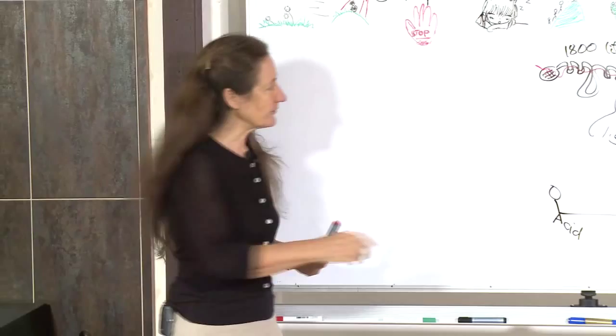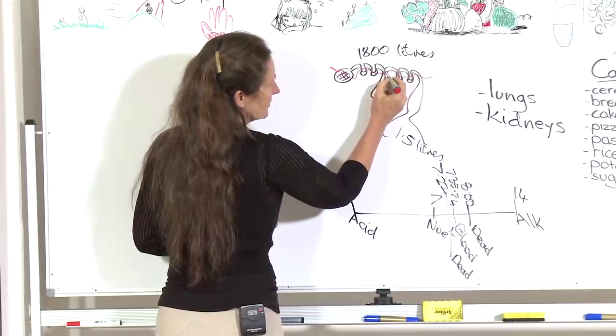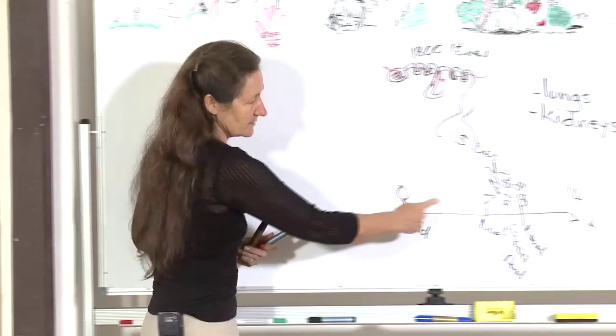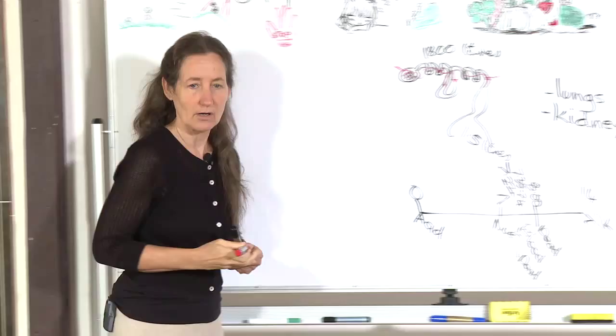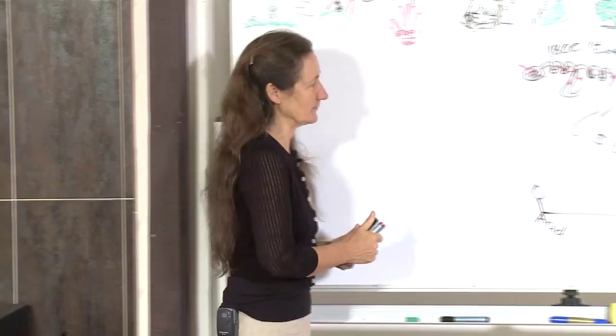If the pH of the blood is getting too acid, extra acid is dropped into the tubules to be urinated out. If the pH is going too alkaline, the blood pulls extra acid back out of the tubules and into the blood. In this way the kidneys are constantly monitoring the pH of the blood, so you don't have to worry about it.